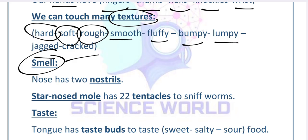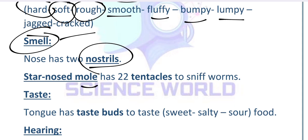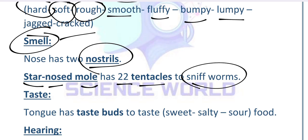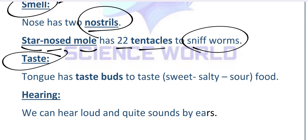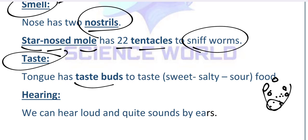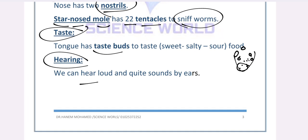Now let's talk about smell. We have two nostrils in our nose. There is a mole that looks like a rat — it has a star-shaped nose with 22 tentacles to sniff out worms underground. For taste, we use our tongue, which has many dots called taste buds. We can taste sweet, salty, sour, and bitter food. For hearing, we can hear loud and quiet sounds.